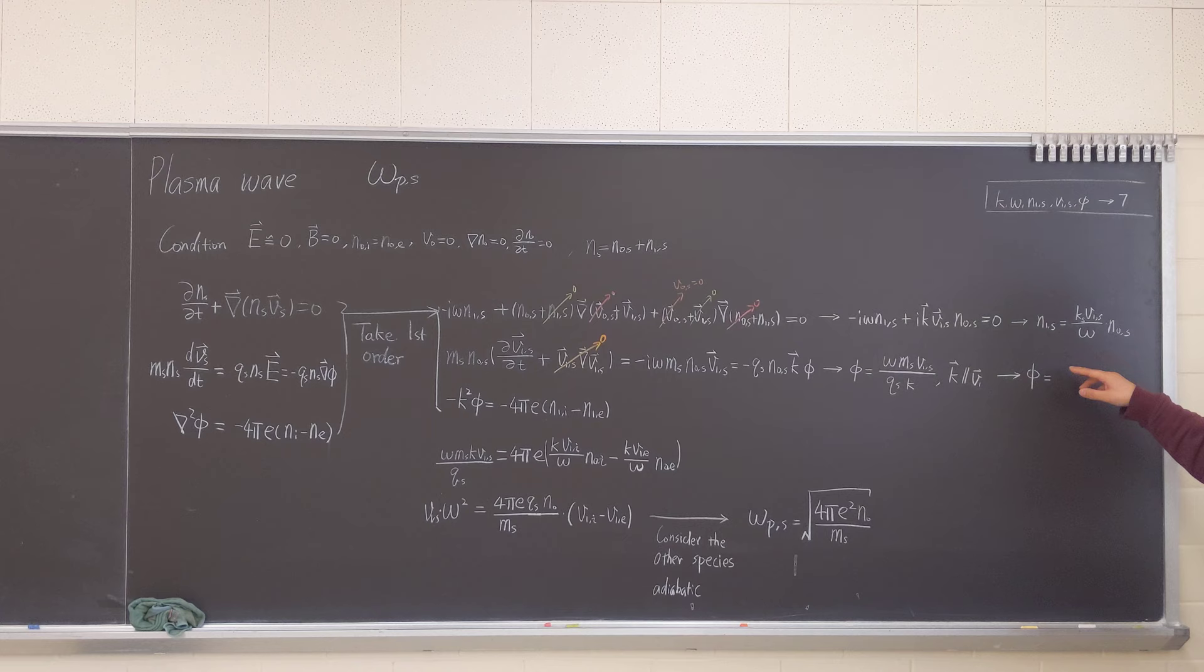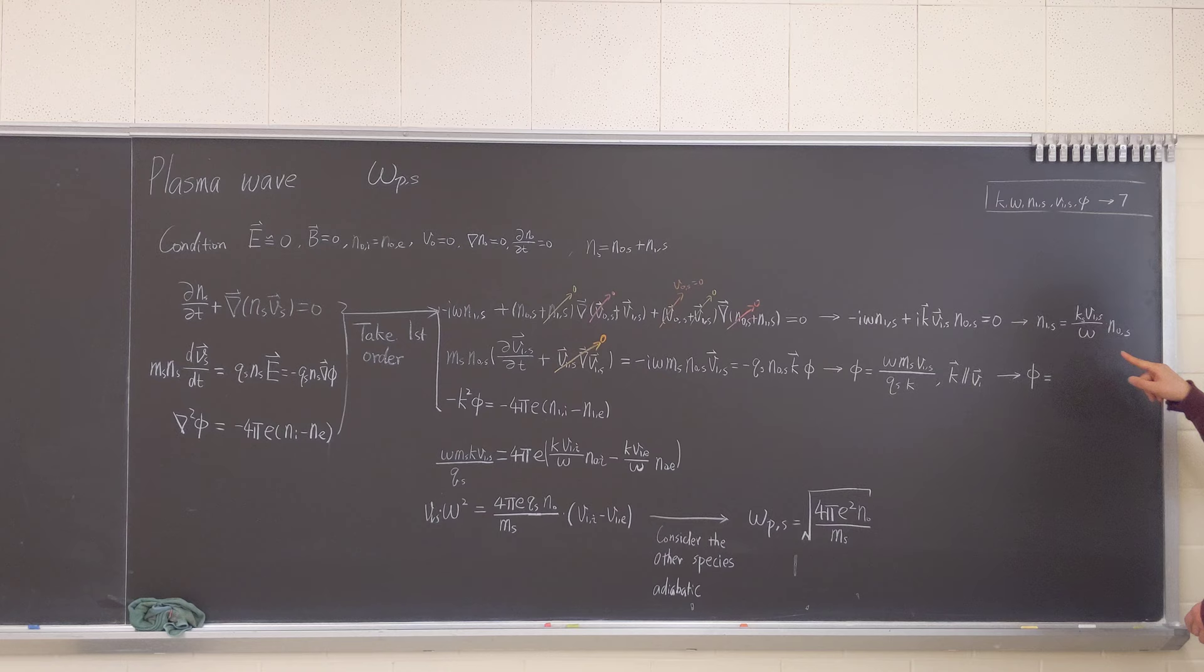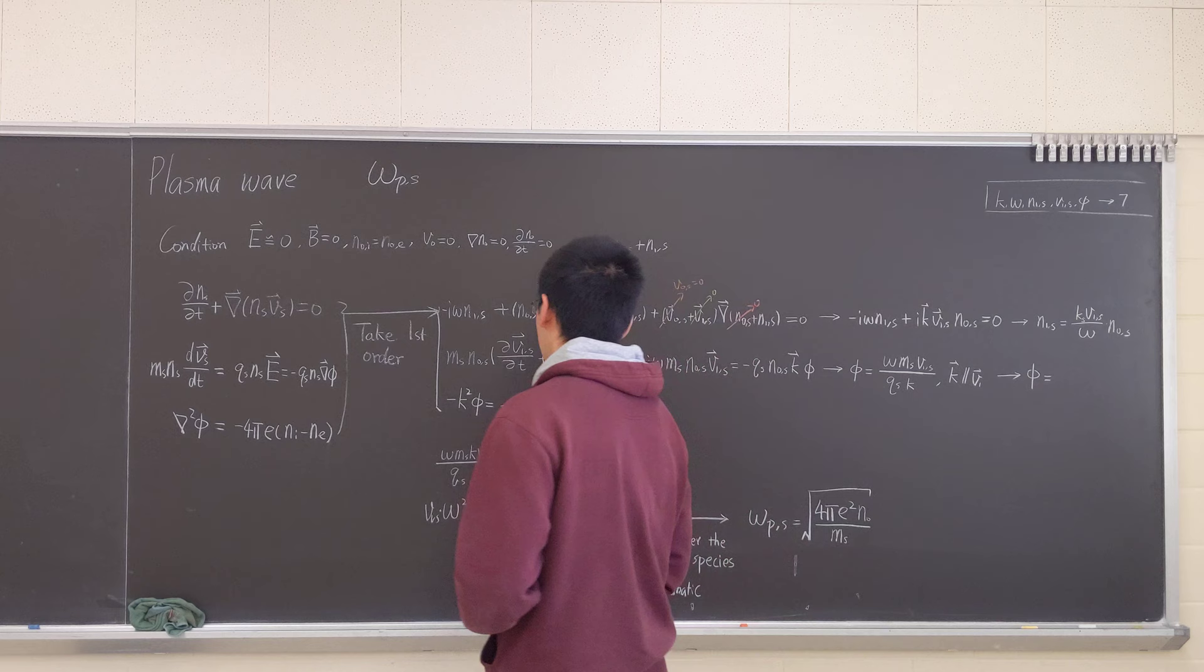We have zero and we have this expression. So it gives us an understanding of what's the first order density in terms of the background density. So N1 equals to K S V1 over omega times N0. So this is what we're using. These are basically two equations because there are two species.